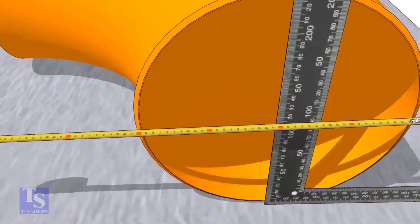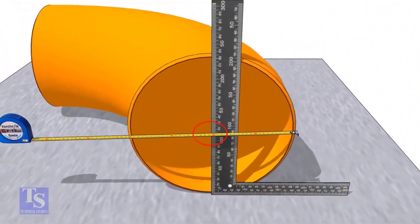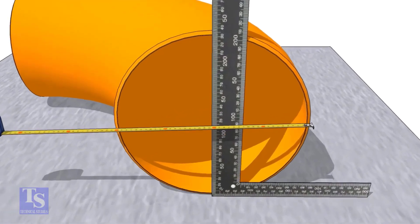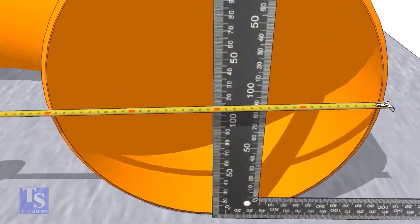Put a right angle at the center of the elbow. Make sure the distance from the edge of the elbow to the face of the right angle is equal.